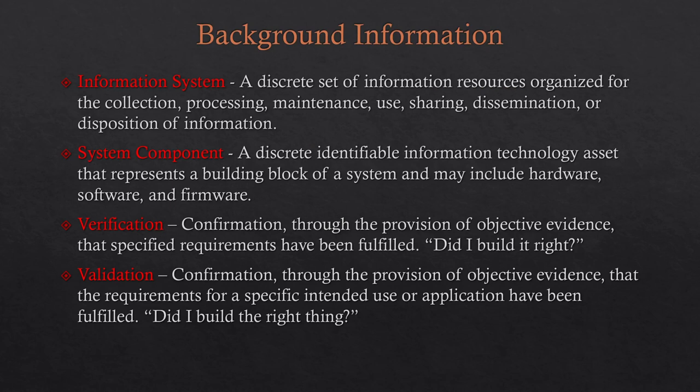The first background concept is understanding that you have an information system — a collection of resources that perform some activity with information. In this framework, we're talking about federal contract information and controlled unclassified information. Everything you collect together, put a network diagram around, and say 'everything inside this box is my system' — that's what we're talking about. The components that make up that system are your system components: hardware, software, firmware, and even people.